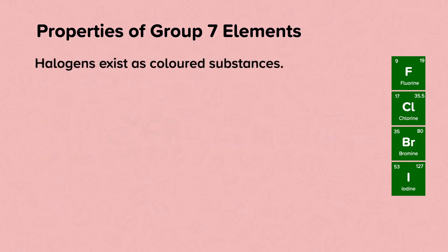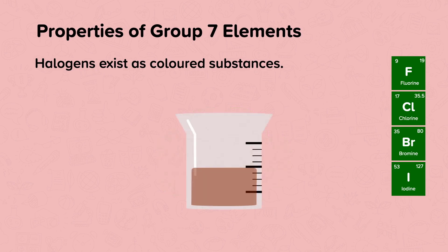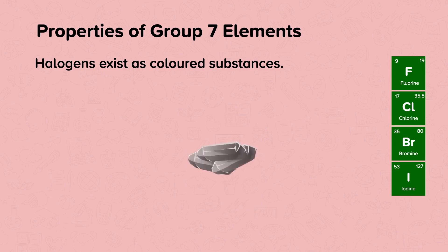Halogens exist as coloured substances. Fluorine is a toxic pale yellow gas. Chlorine is a toxic yellow-green gas. Bromine is a red-brown liquid that evaporates to form a red-brown gas. Iodine is a dark black-grey solid that evaporates to form a purple gas. Notice that as you go down the group the states at room temperature change from gas to liquid and then to solid.